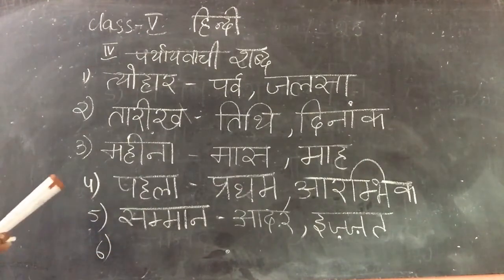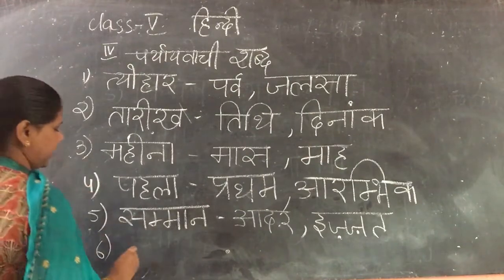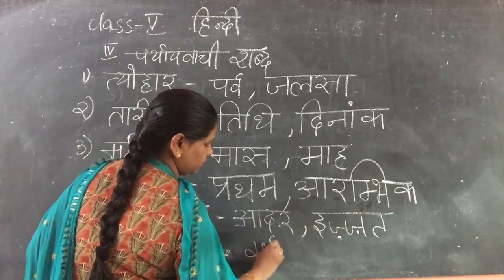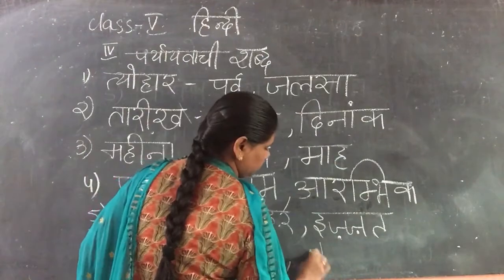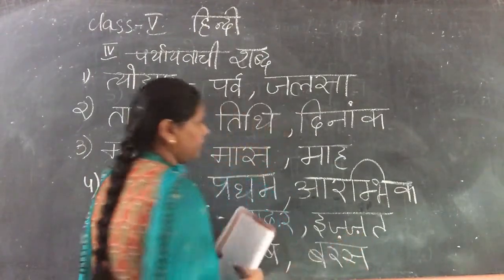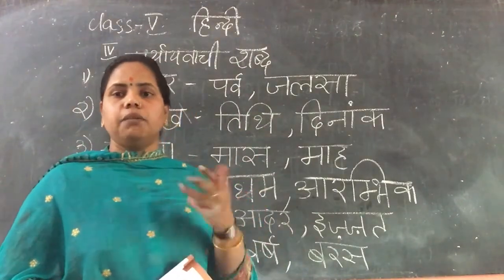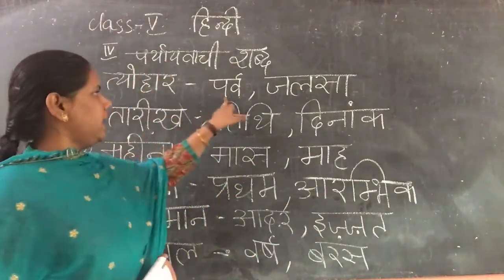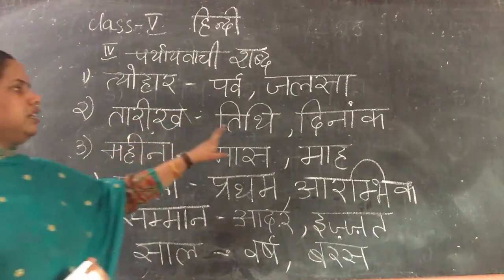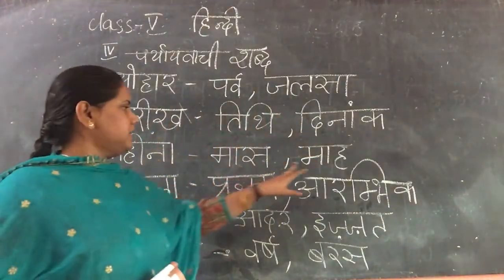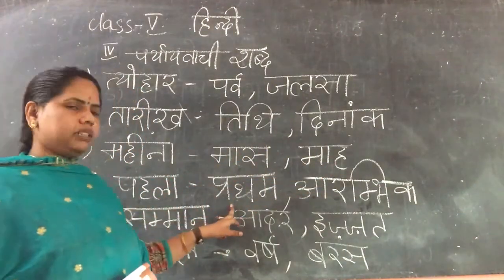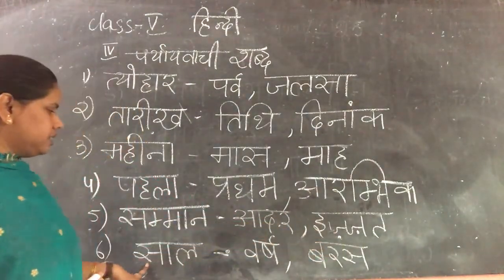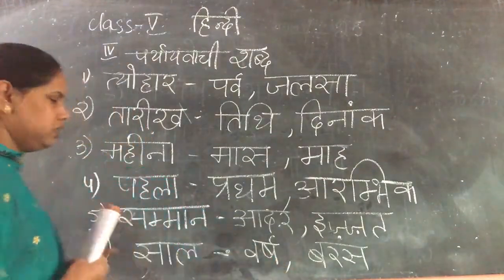Sixth one: Saal means Year. We call Saal as Varsh, and also Baras. I am giving one extra word because you need to learn more words and try to know their meanings. Tiohar — Parva — Jalsa. Tarih — Tithi — Dhinam. Mahina — Maas — Mah. Pahla — Pratham — Aarambik. Samman — Iza. Saal — Varsh — Baras. Now next comes.